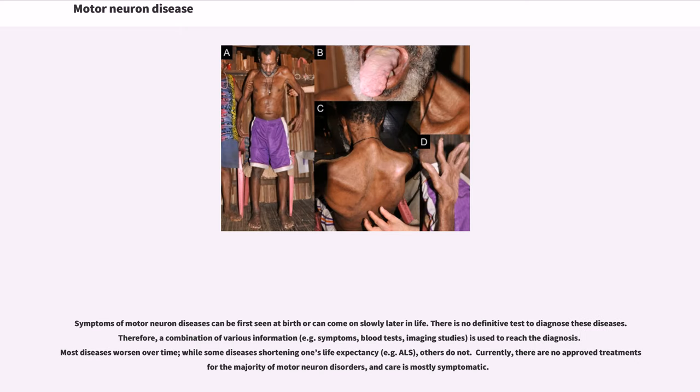Symptoms of motor neuron diseases can be first seen at birth or can come on slowly later in life. There is no definitive test to diagnose these diseases. Therefore, a combination of various information, for example symptoms, blood tests, imaging studies, is used to reach the diagnosis.